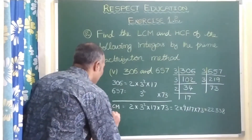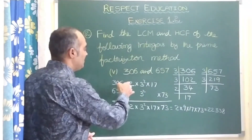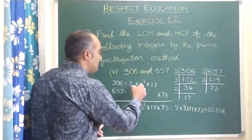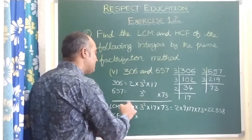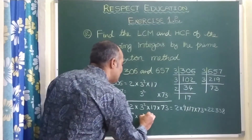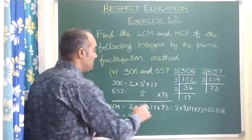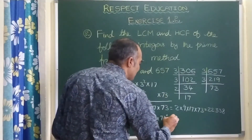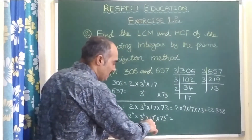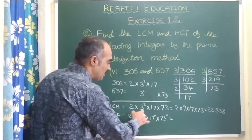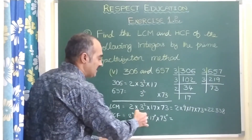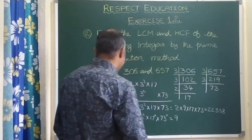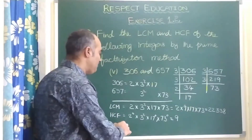Now let us see the HCF. H stands for highest, we should have the least. 2 power 1 and nothing — nothing means 2 power 0. For 3: 3 square and 3 square — highest is 3 square, even the least is also 3 square. If both are the same, we take that value. For 17: 17 power 1 and nothing — take 17 power 0, which is 1. For 73: nothing and 73 — 73 power 0, which is 1. So it is 1 into 9 into 1 into 1, giving 9. Therefore HCF is 9.